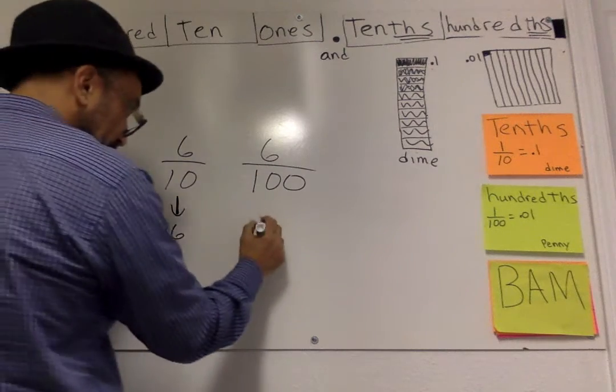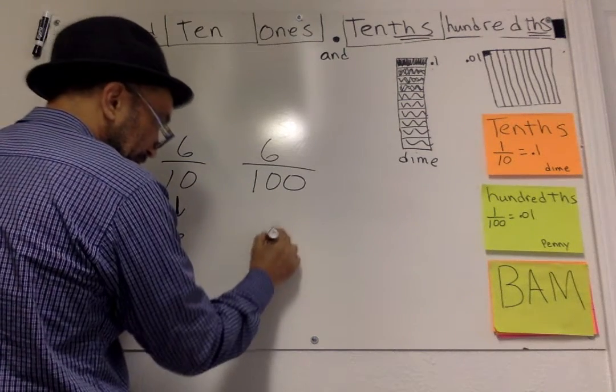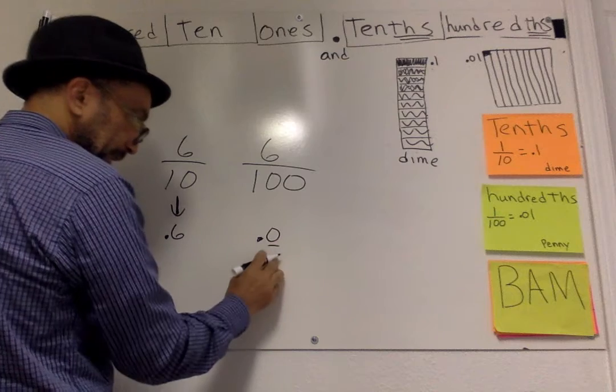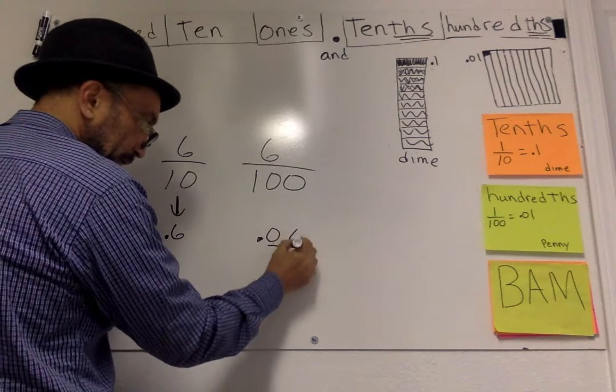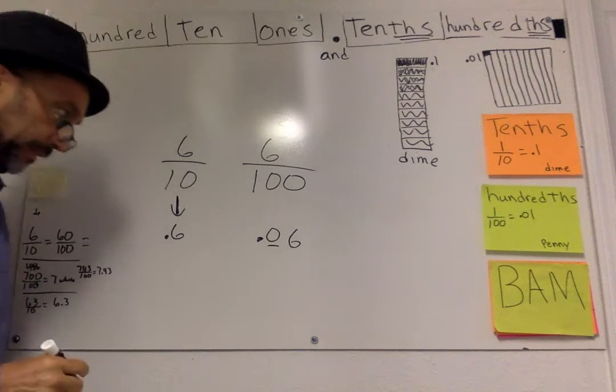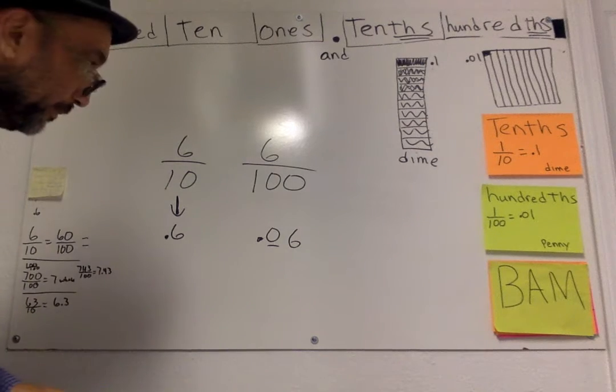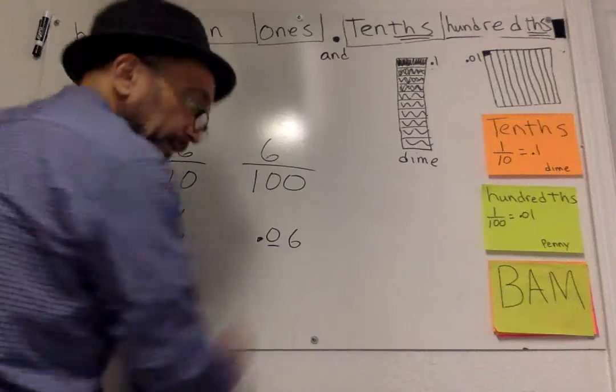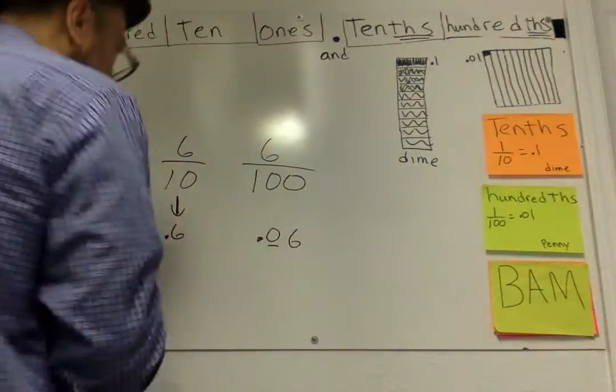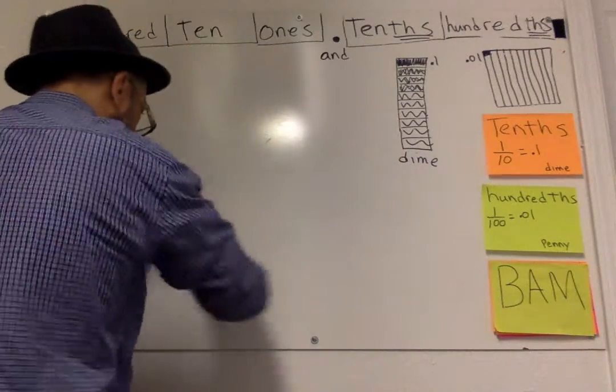This equals 60 cents, .6, right? But in our book, they won't put the zero because there's no hundredths. Now, over here, this is, there's no tenths, six hundredths, and there's six hundredths. Do you understand?